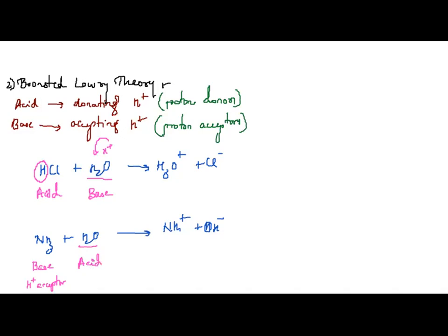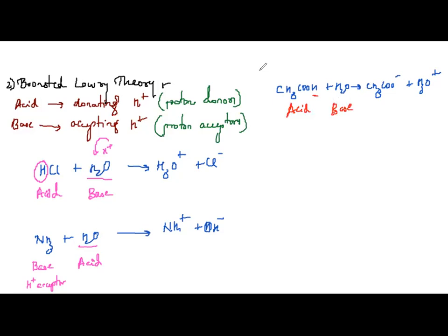So CH₃COOH, H₂O (in some reactions), and HCl are all acids — proton donors. NH₃ and water (in other reactions) are bases — proton acceptors. Now, in the reverse reaction of HCl + H₂O → H₃O⁺ + Cl⁻: the reverse is H₃O⁺ + Cl⁻ → HCl + H₂O. Here H₃O⁺ donates a proton (acts as acid) and Cl⁻ accepts a proton (acts as base). These are conjugate acid-base pairs.